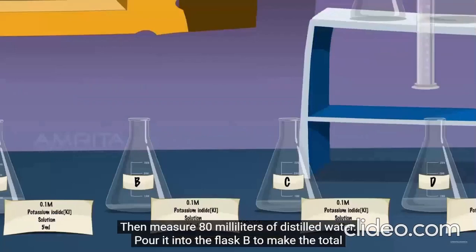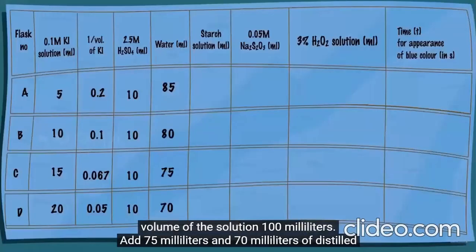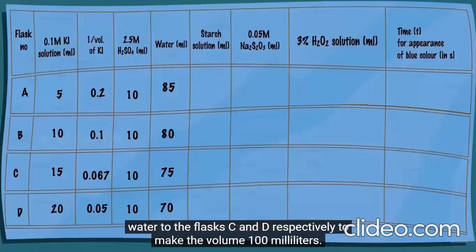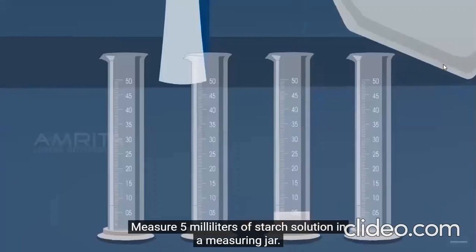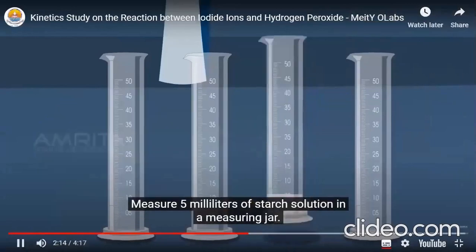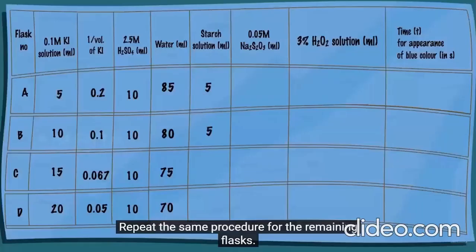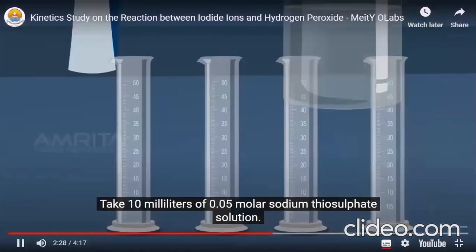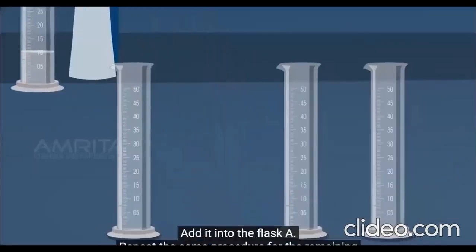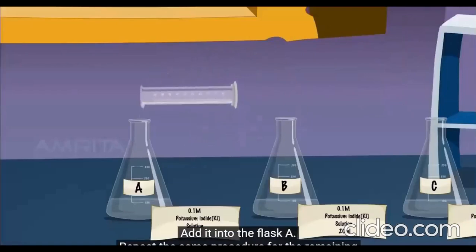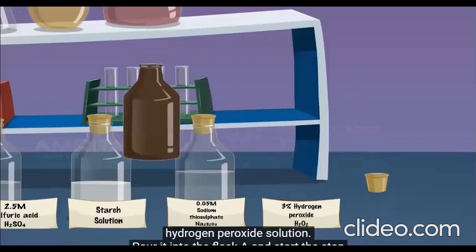Measure 80 milliliters of distilled water and pour it into flask B to make the total volume 100 milliliters. Add 75 milliliters and 70 milliliters of distilled water to flasks C and D respectively to make the volume 100 milliliters. Then measure 5 milliliters of starch solution and pour it into flask A. Repeat the same procedure for the remaining flasks. Take 10 milliliters of 0.05 molar sodium thiosulphate solution and add it into flask A.